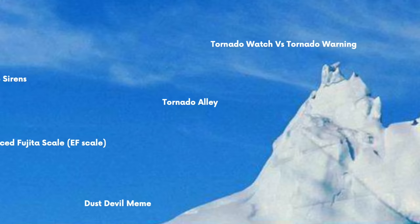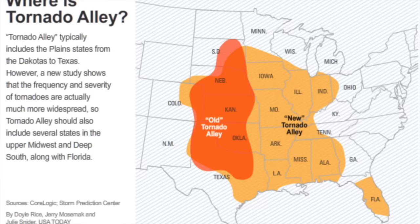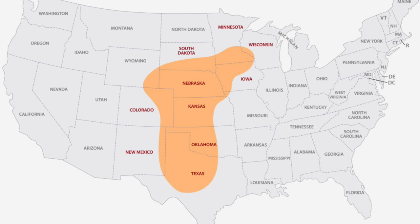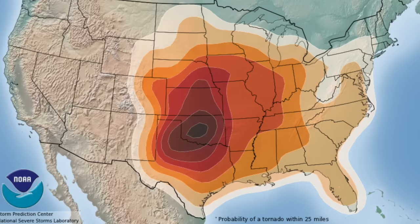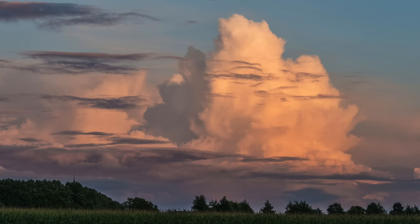Tornado Alley is a large geographic area of the United States known for frequent and violent tornadoes. The exact borders are debatable, but they usually cover Minnesota, Iowa, South Dakota, Nebraska, and especially Kansas, Oklahoma, and parts of Texas. Tornadoes tend to form here due to warm, moist air from the Gulf of Mexico mixing with cool air from the Rockies, leading to an unstable atmosphere and the creation of supercells.